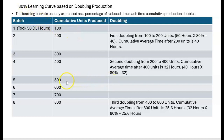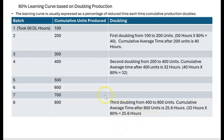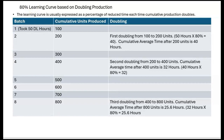Batches five through seven produce additional 100-unit batches with no doubling — we reach 500, 600, and 700 cumulative units. Then batch eight brings us to 800 cumulative units — that's the third doubling from 400 to 800. The cumulative average time after 800 units drops to 25.6 hours: we take the old cumulative average of 32 hours and multiply by 80%. So assuming an 80% learning curve, the cumulative average time after 800 units is 25.6 hours.